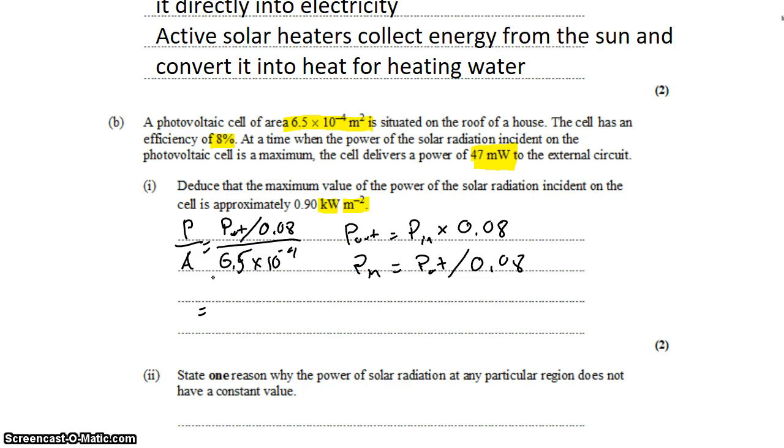The output power is 47 milliwatts. We'll divide that by 0.08 and divide that by 6.5 times 10 to the negative 4 and arrive at 904 watts per square meter, which is about the same as 0.9 kilowatts per square meter.